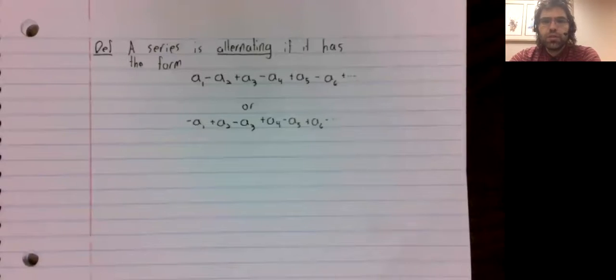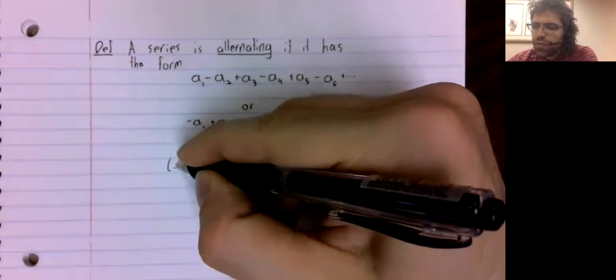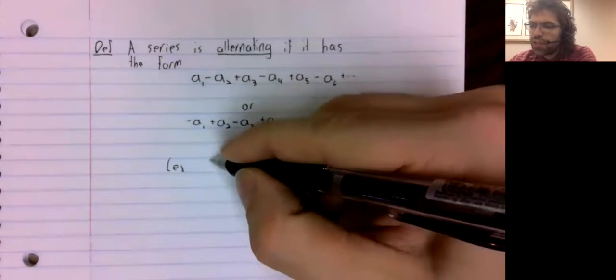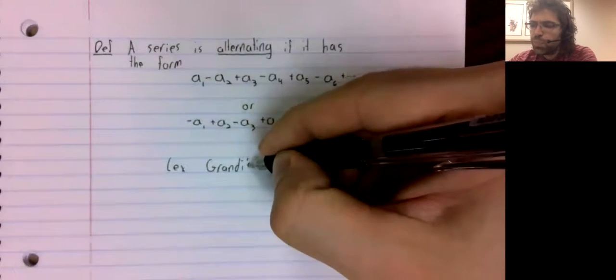All right, this will be a brief video because the alternating series test is quite straightforward. A series is alternating if its terms are alternatingly positive and negative. We have seen an example of an alternating series before.